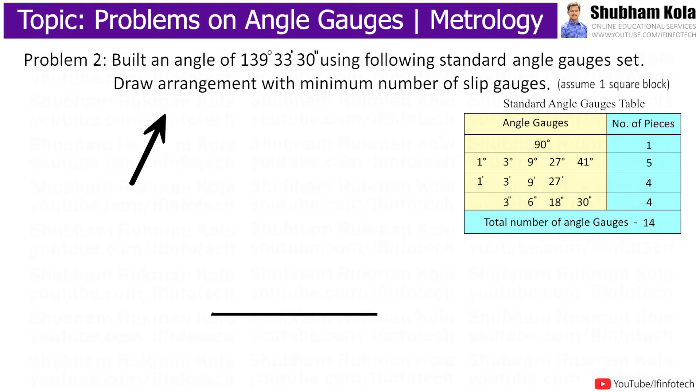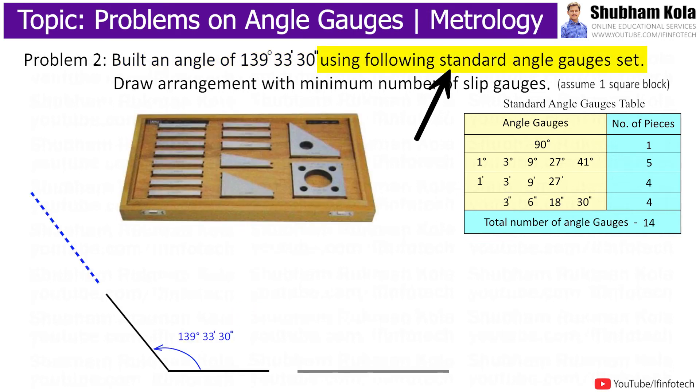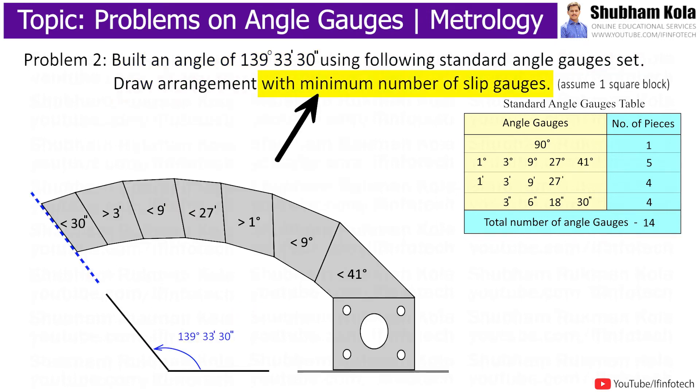For the next problem, the statement is: Build an angle of 139 degrees, 33 minutes, and 30 seconds using the following standard angle gauge set, and draw an arrangement with the minimum number of slip gauges, assuming a square block.